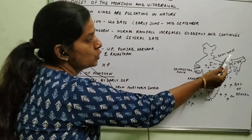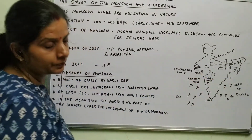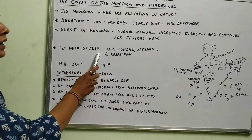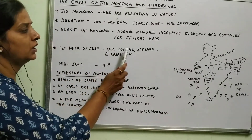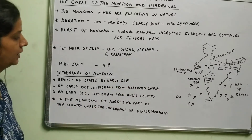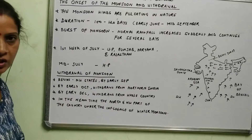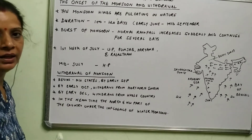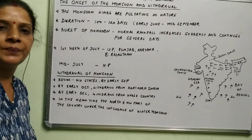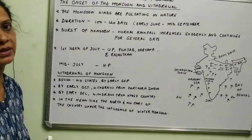On June 29th, the monsoon reaches Delhi. After that, in the first week of July, it reaches the states of Uttar Pradesh, Punjab, Haryana, and Eastern Rajasthan. Then by mid-July it reaches Himachal Pradesh. So by mid-July, monsoon winds cover the whole country, after which it remains in India till September.